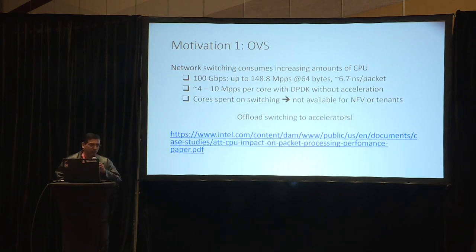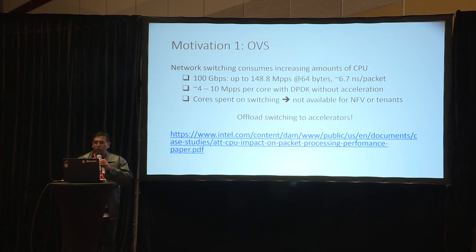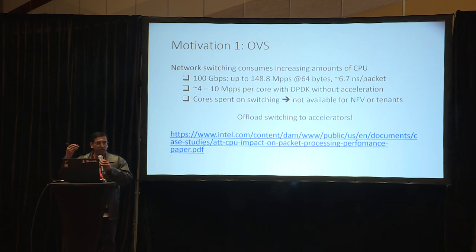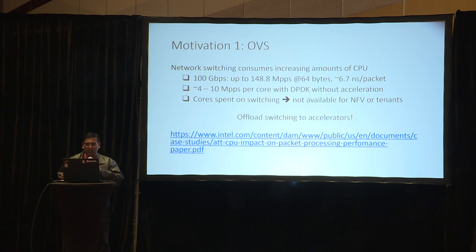So why do we need to accelerate networking at all? If you look at where we are with OVS switching and other forms of network switching, they consume a lot of CPU, especially as we move towards 100 gigabits per second and packet rates go up. So there's an increasing need to offload them to some kind of hardware accelerator — that's also needed for improving latency and jitter.